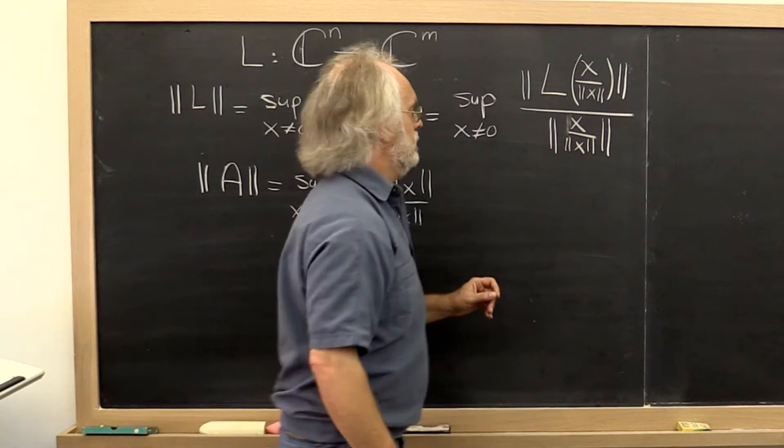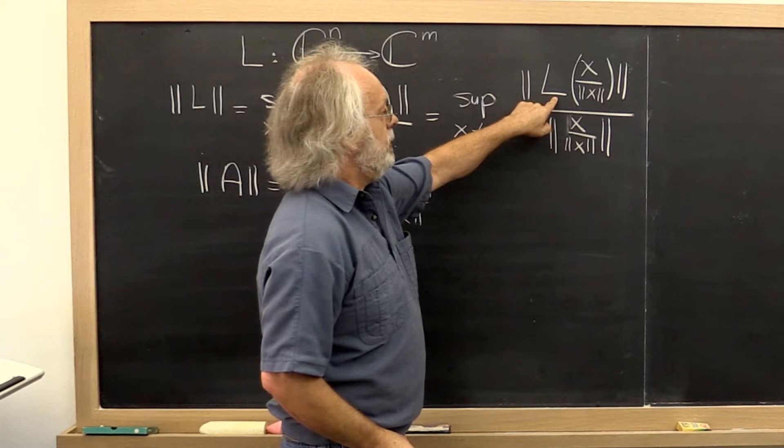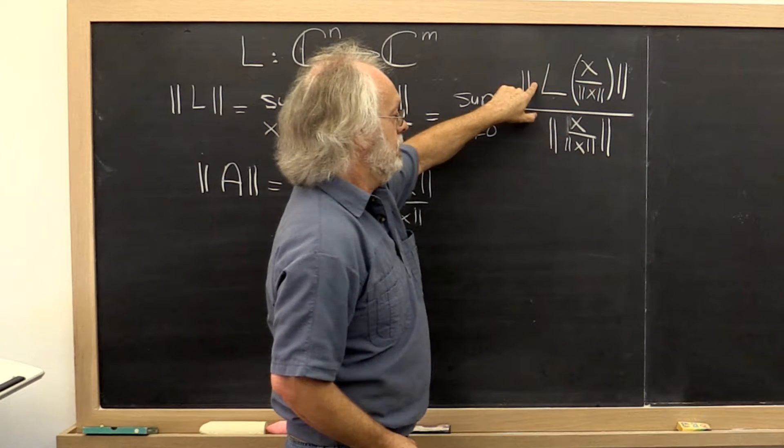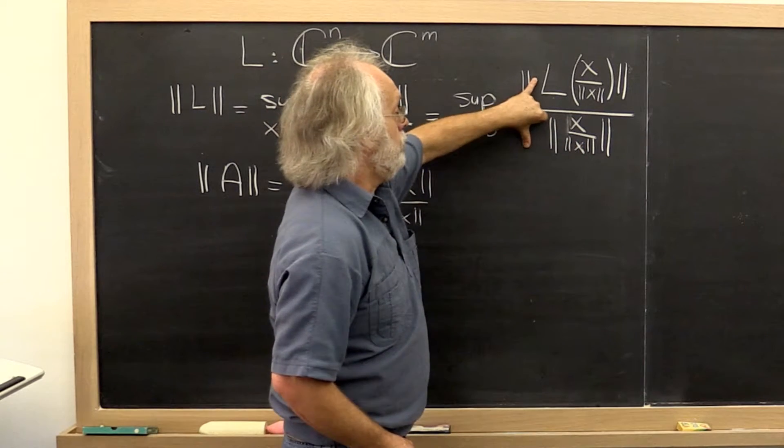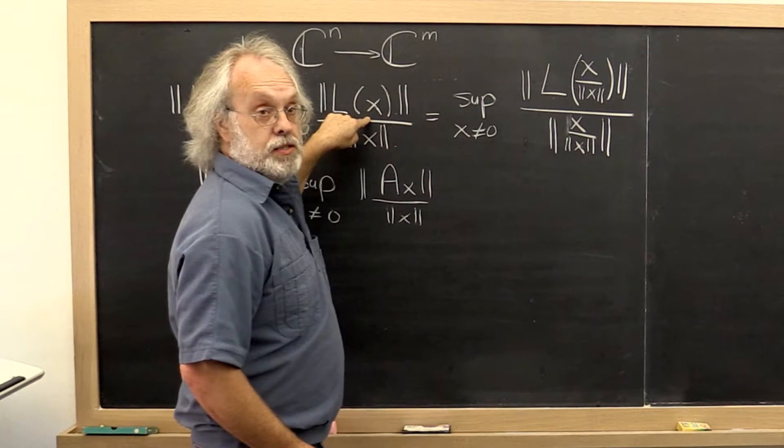What's happening here? Because this is a linear transformation, you could bring this outside. Because this is a norm, we could bring this outside. Those two cancel, therefore it's the same as this.